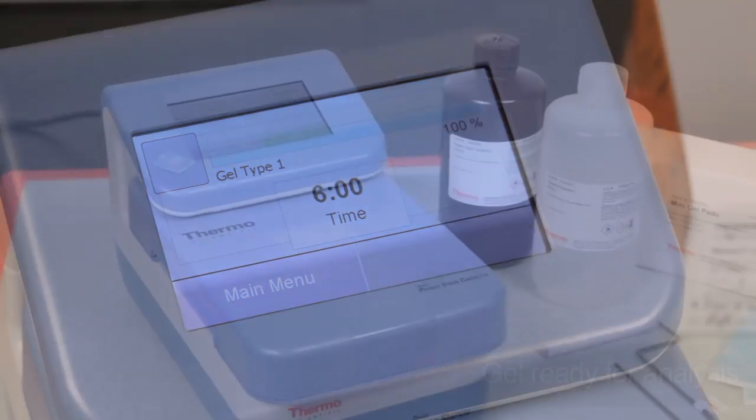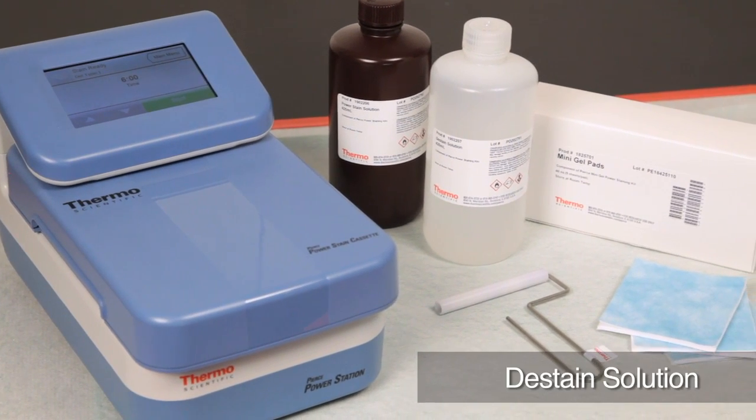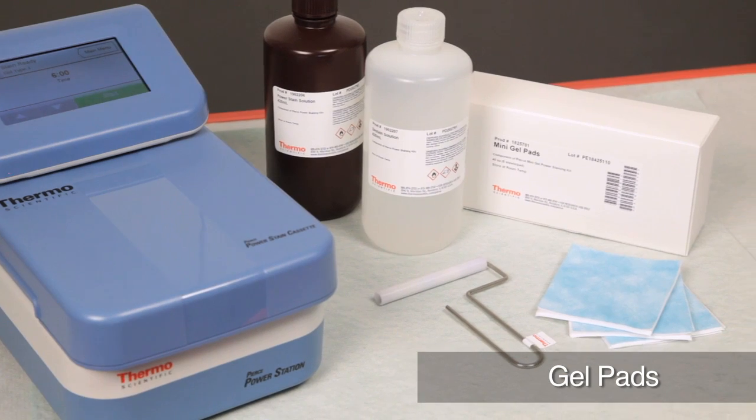Rapid staining of protein gels is achieved using the Pierce Power Staining Kits, which include the Power Stain Solution, de-stain solution and gel pads.